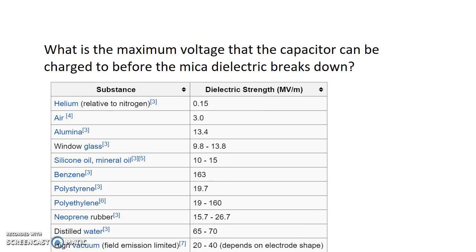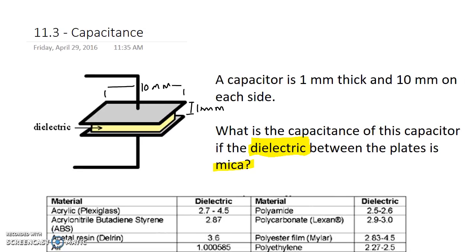The next thing we want to know is the maximum voltage that the capacitor can be charged to before the mica dielectric breaks down. Basically, if you put too much charge on the plates, then the electric field becomes so strong that we can push charges through the dielectric, break it down, and we get a shock or a current through the capacitor. Based on the dielectric and the properties of the capacitor itself, there's going to be a limit to how much voltage we can put across this capacitor before it breaks down.